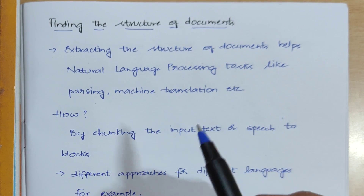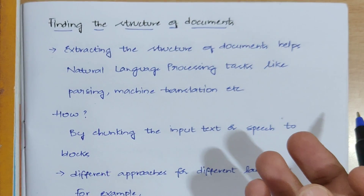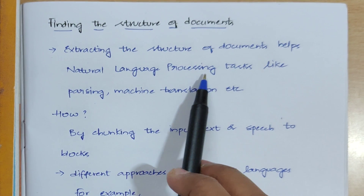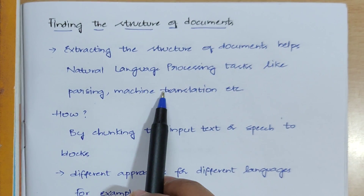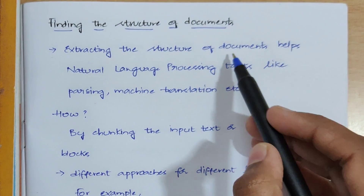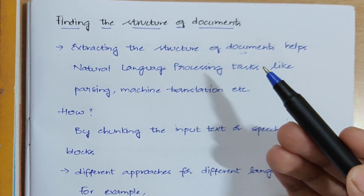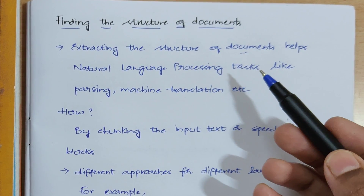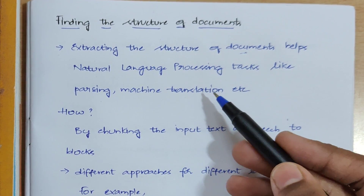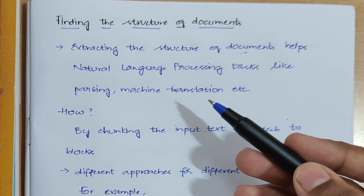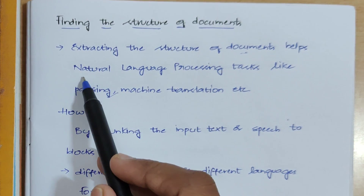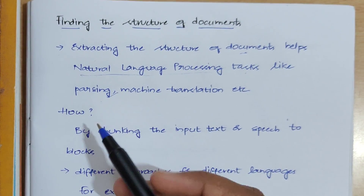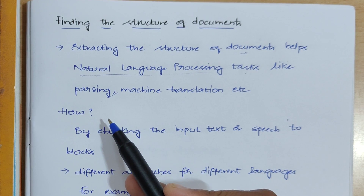Why do we have to extract the structure of documents? Extracting the structure of documents helps natural language processing tasks like parsing, machine learning, etc. Documents might be any PDFs, Word documents, or any documents. Whenever you are trying to extract that document, you are either translating, understanding, or parsing that text for doing NLP tasks — you are actually finding the structure of documents.